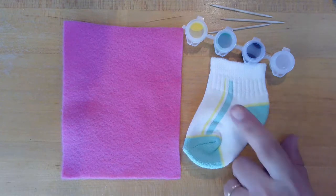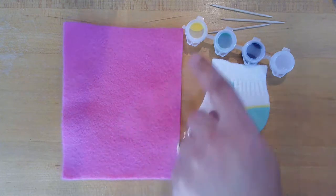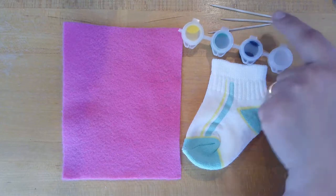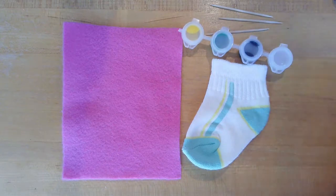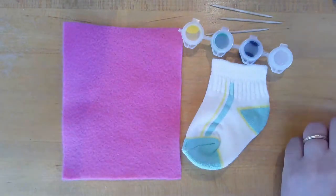In your kit, you'll have one baby sock, one square felt, some paint, a pot of glue, that's the white stuff in your pot, and three toothpicks for doing your decorations. You'll need a pair of scissors to complete this.